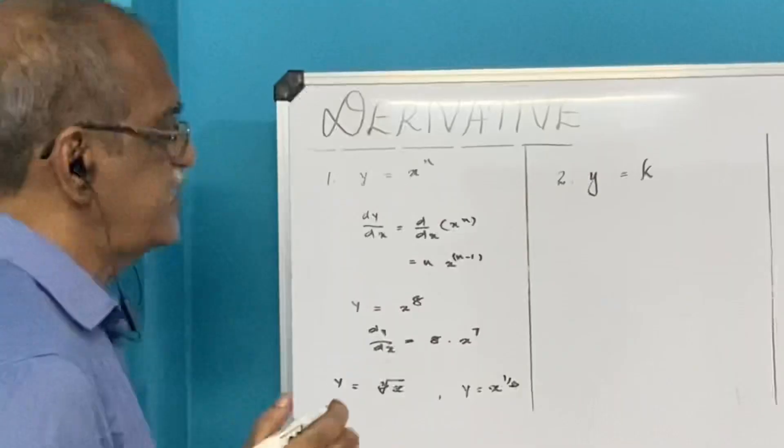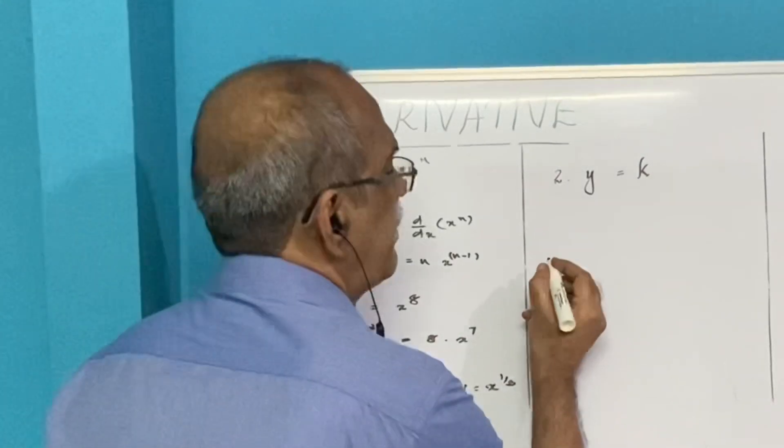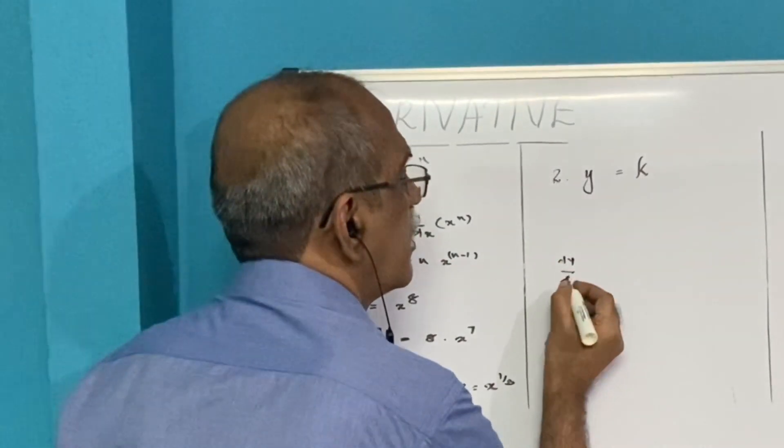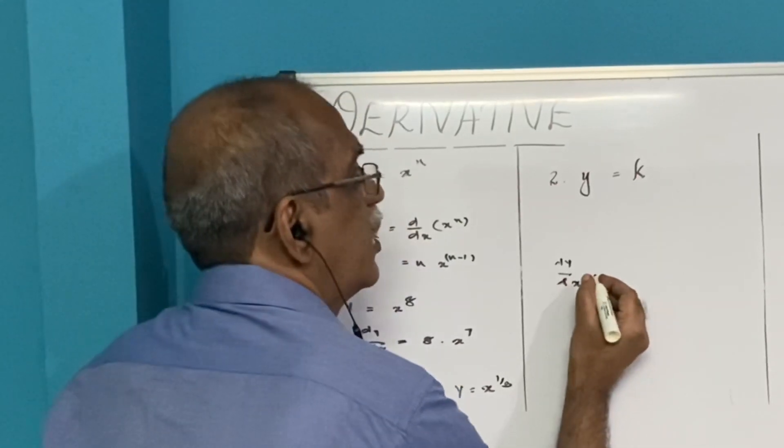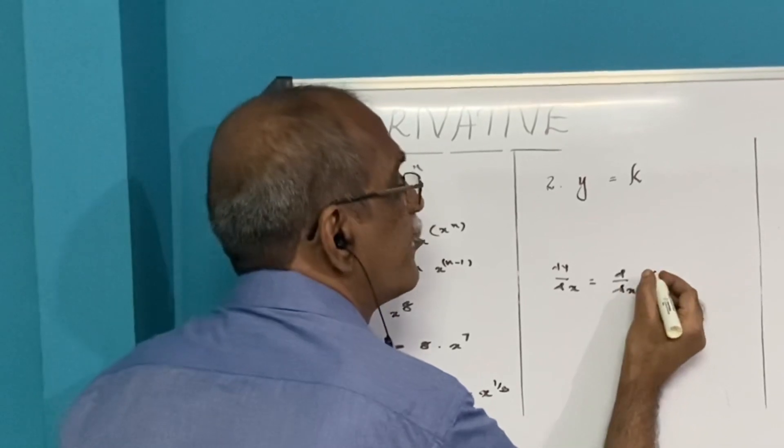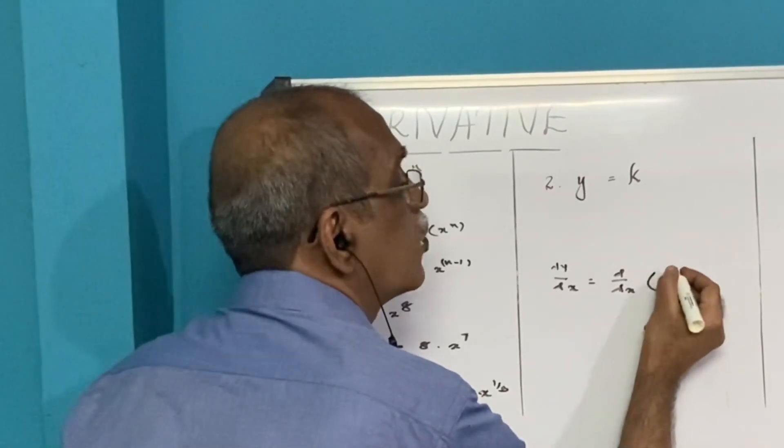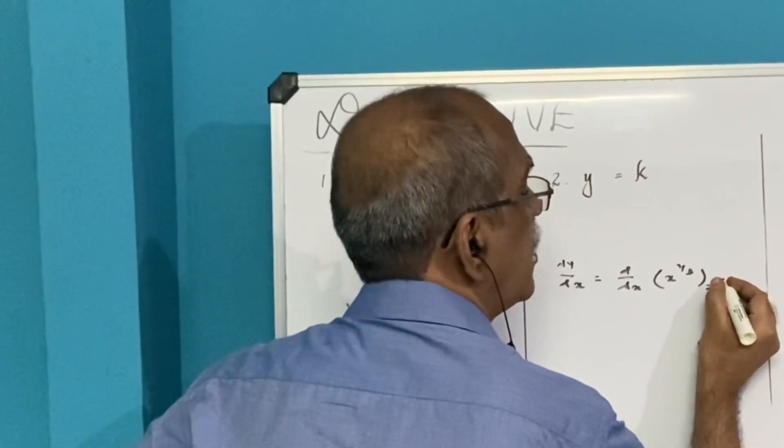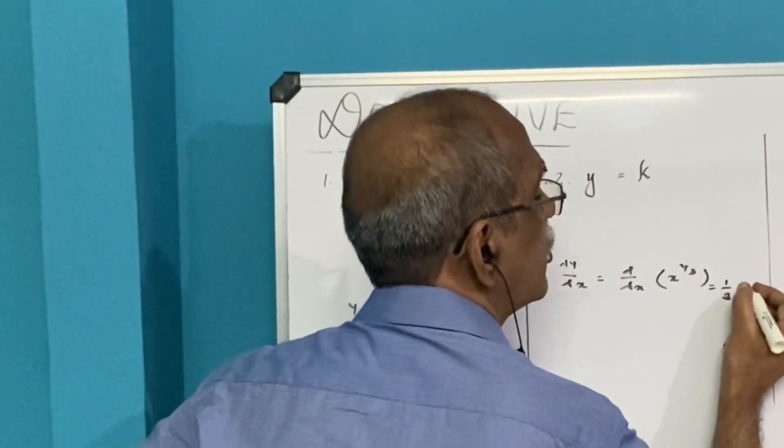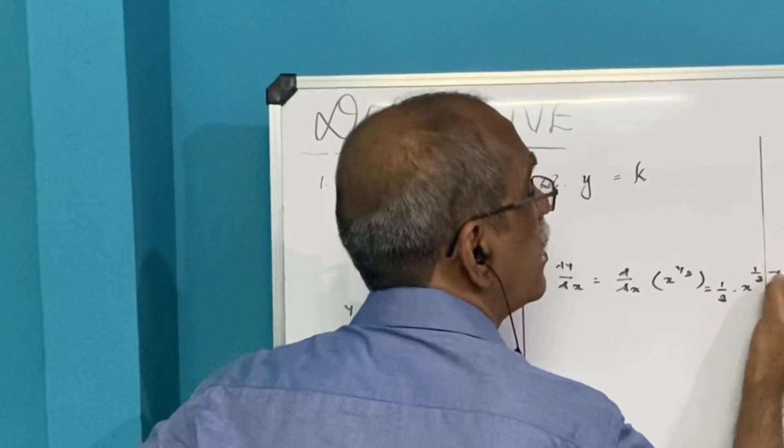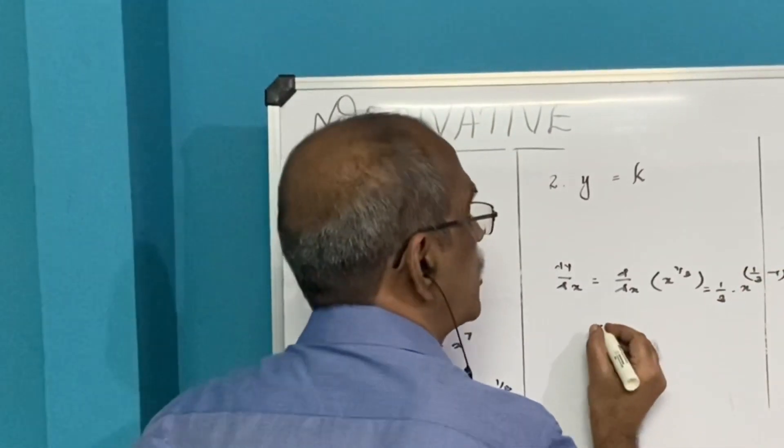If I differentiate y, then dy/dx will be 1/3 times x raised to 1/3 minus 1, which is equal to 1/3 times x raised to minus 2/3.